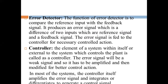This error signal is fed to the controller for the necessary control action. The controller is the element of the system — either within or external to the system — which controls the plant. The error signal from the controller is a weak signal, so it has to be amplified and then modified for better control actions.